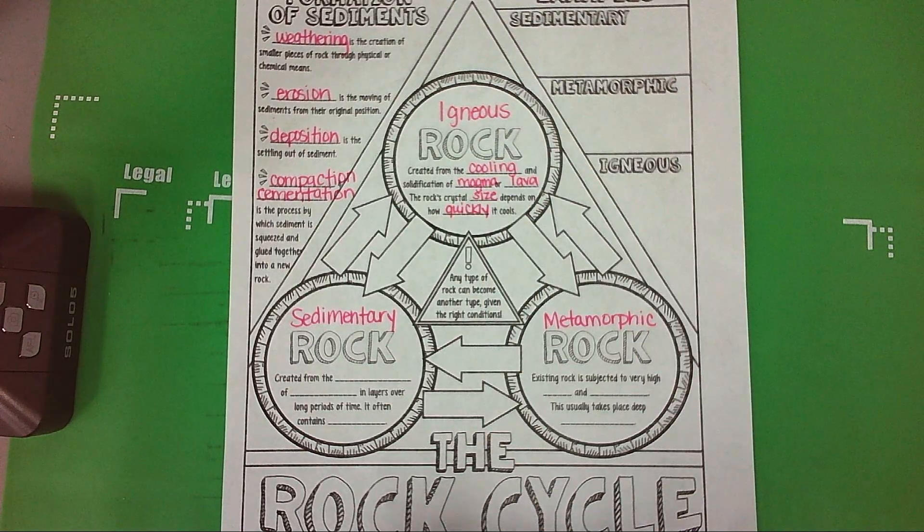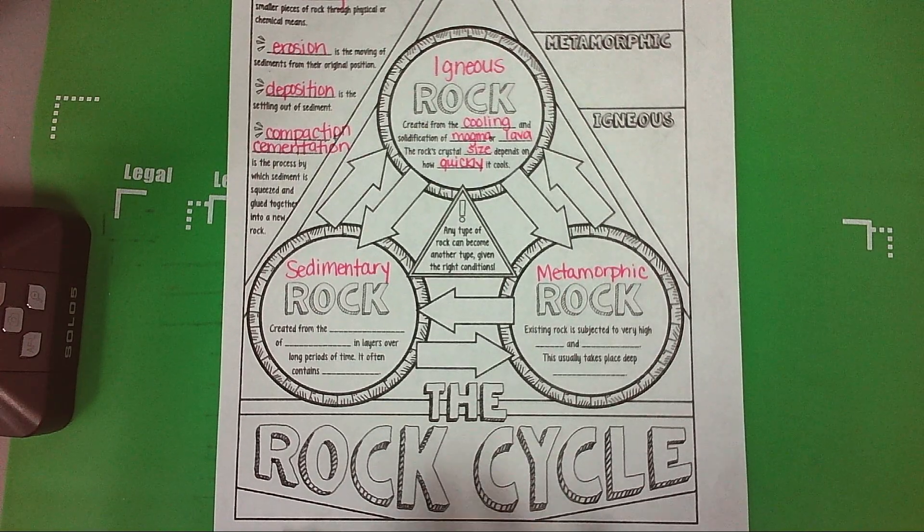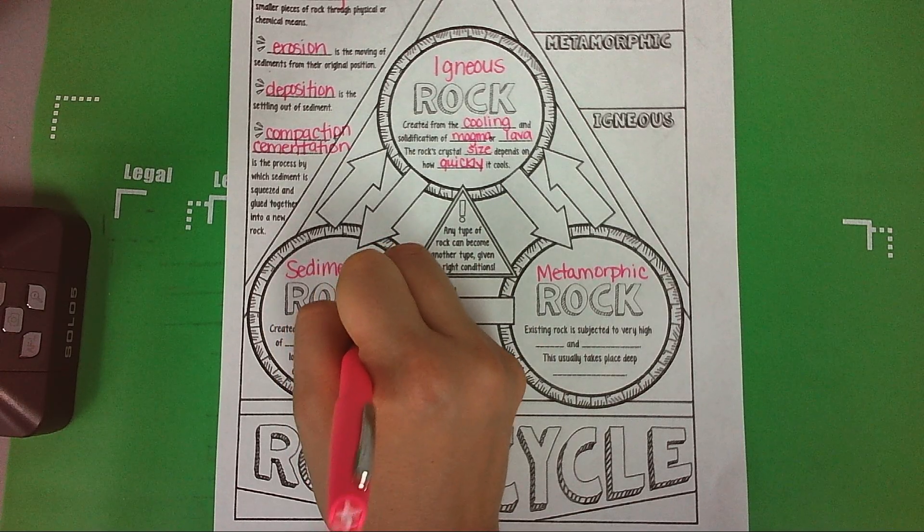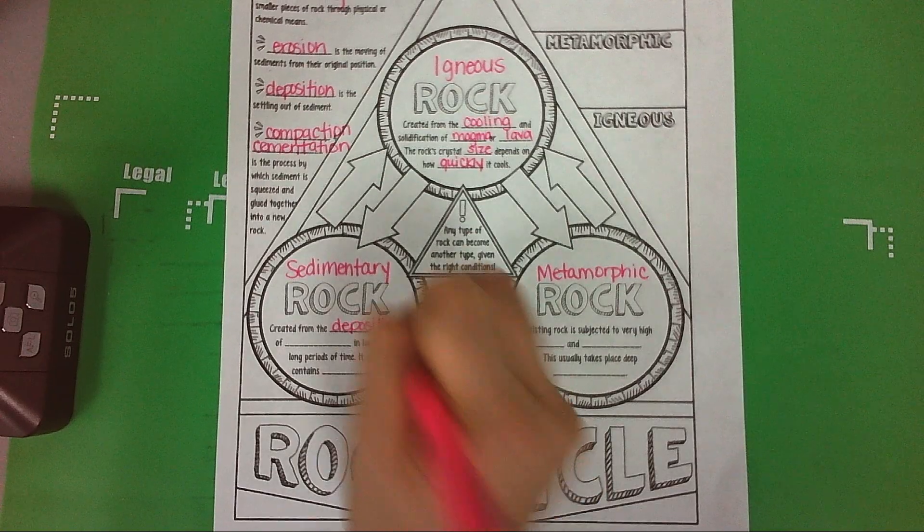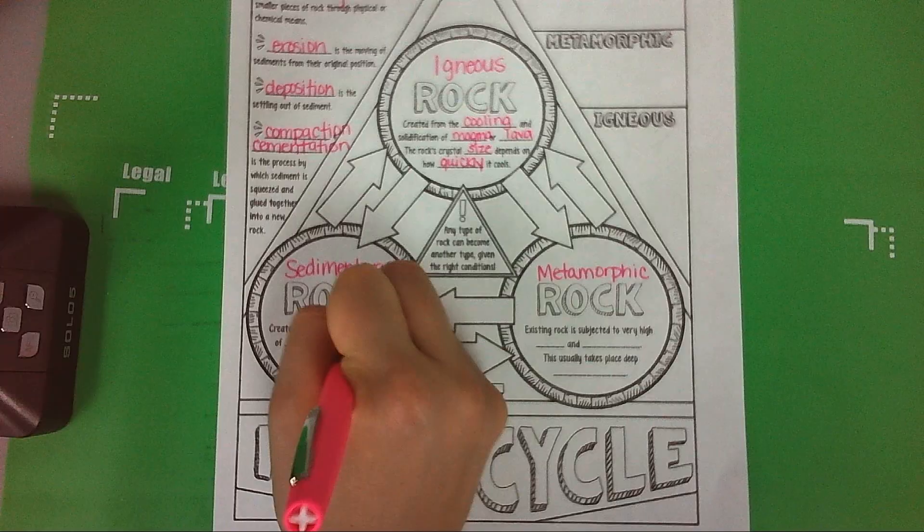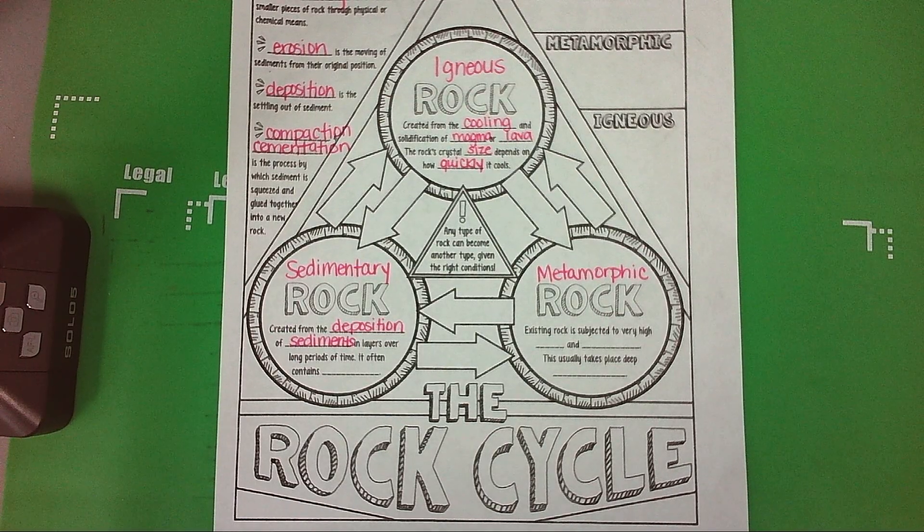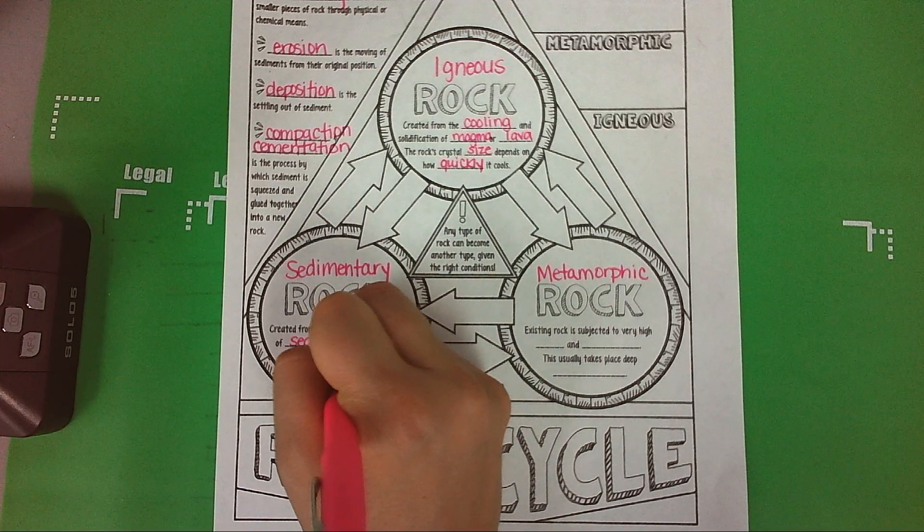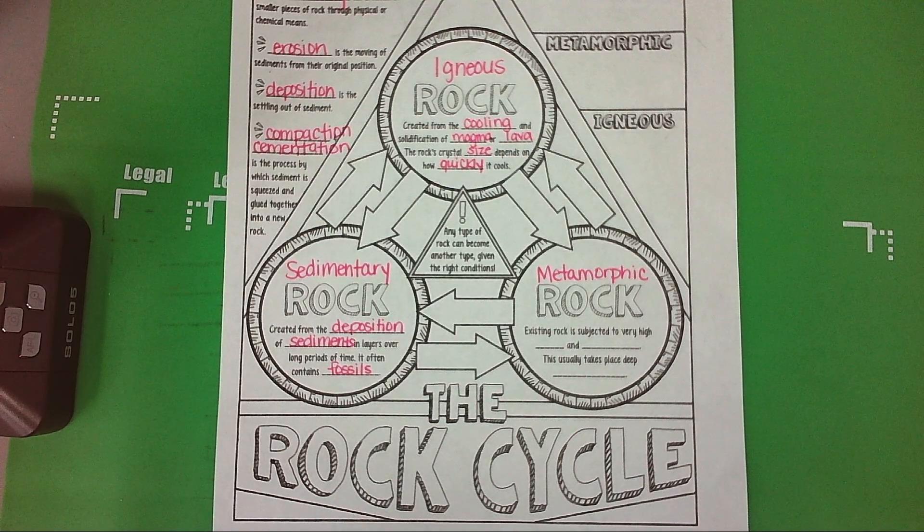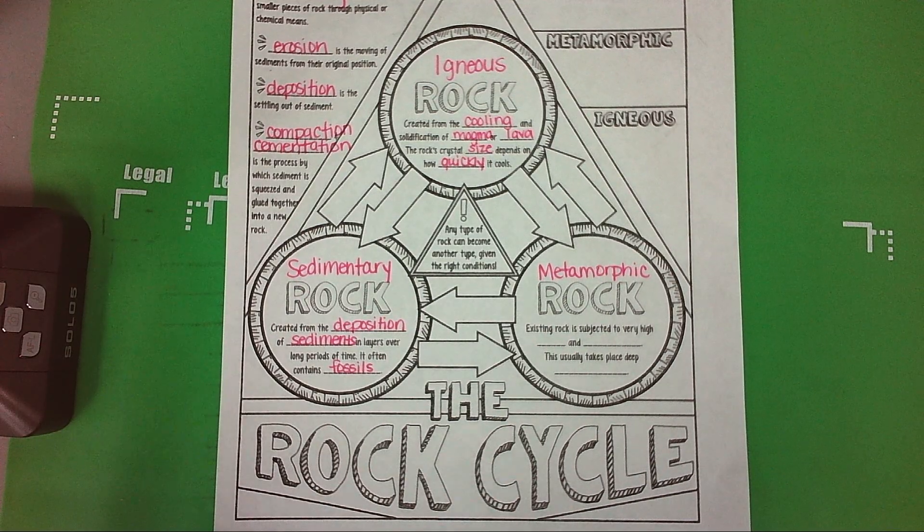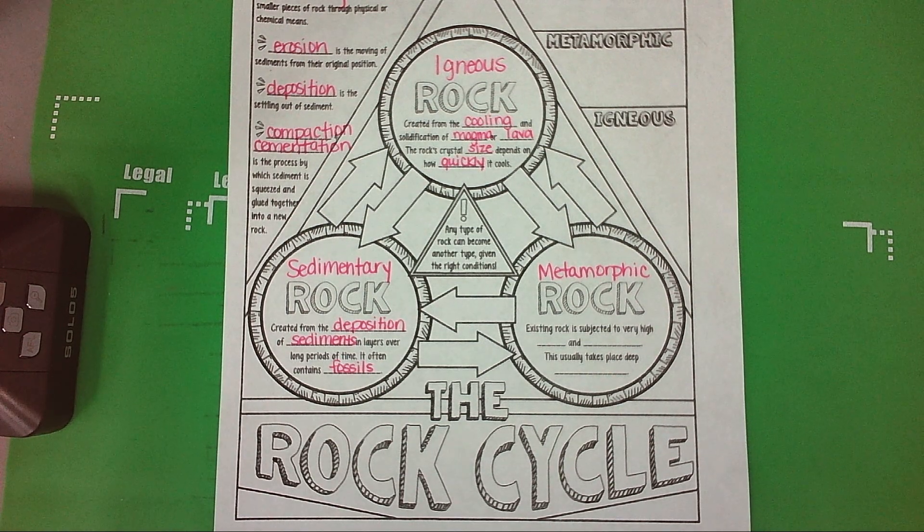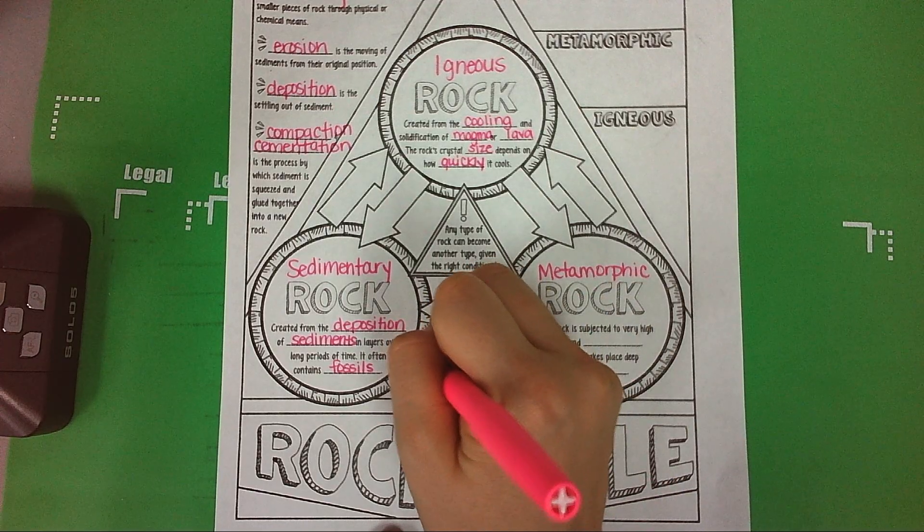Let's look at sedimentary rock. Sedimentary rock is created from the deposition - remember that's when rock is deposited in a new location - of sediments. Sediments are the small pieces of rock in layers over long periods of time. Often contains fossils. We'll talk about fossils in a later unit, but know that fossils are contained in sedimentary rock.